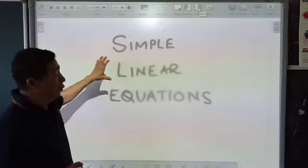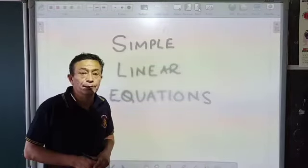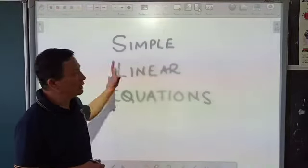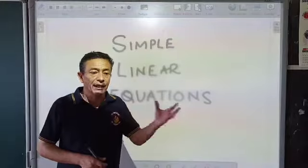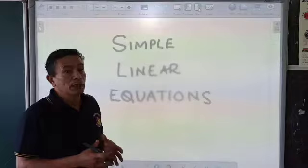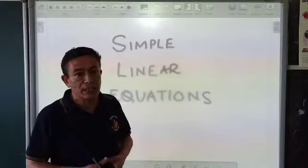Now we can understand what linear means. Linear means that there is only one type of variable. For example, in an equation you will only find a variable x or a variable a, but you will not find something like a as well as b.